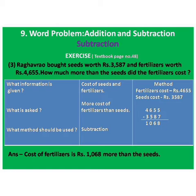Ta method madhe fertilizers and seeds chi cost leha. Fertilizers chi cost ahe rupees 4,655. And seeds chi cost ahe rupees 3,587. Then do subtraction. Subtract 3,587 from 4,655. The answer is 1,068. Write the answer in one sentence: Cost of fertilizers is rupees 1,068 more than the seeds. Fertilizers chi cost 1,068 rupees ne jasht aahe, seeds peksha.